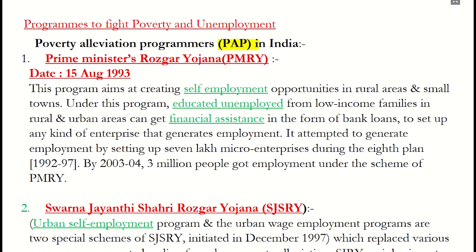Poverty Alleviation Programs: First, PMRY — Prime Minister Rojgar Yojana, launched on 15 August 1993. It aims at creating self-employment in rural areas and small towns for educated unemployed youth. The government helps by providing financial assistance in the form of bank loans so that they can open micro-enterprises.